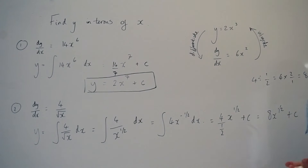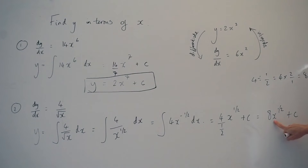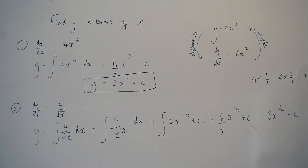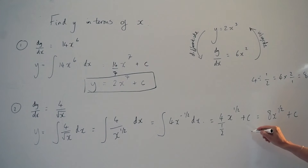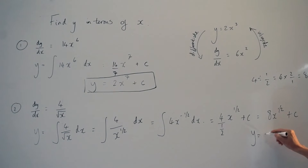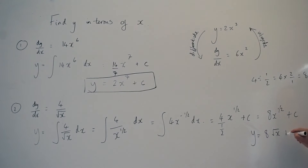And then as a final step, you could just take it out of power form. Remember, anything raised to the power of a half is the same as the square root. So the final answer would be y equals 8 square root of x plus c.